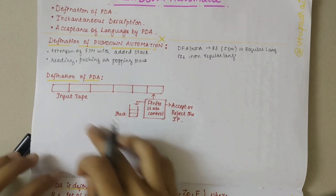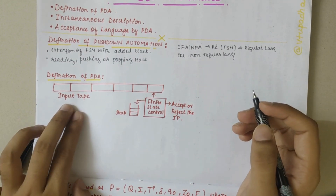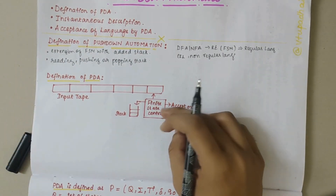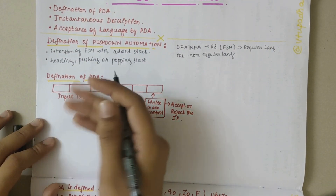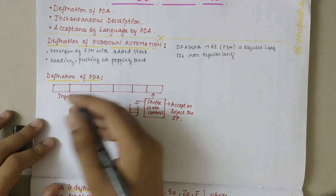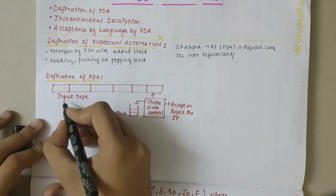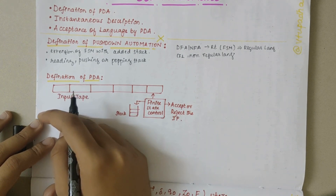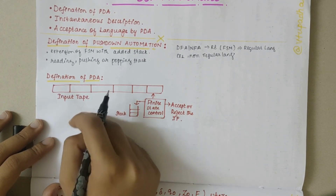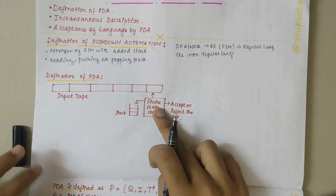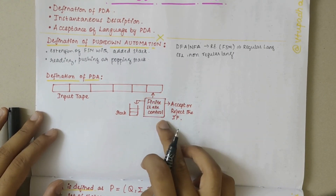Looking at the block diagram, there are three main components of PDA: input tape, stack, and finite state control. The input tape consumes whatever inputs are given — it takes the symbol used in the transition. The input symbol will be consumed; in case of Epsilon or Lambda as input, the finite state control goes from one state to another or remains in the same state.